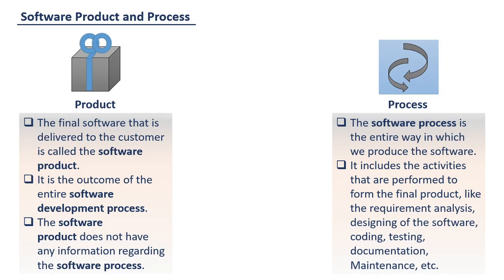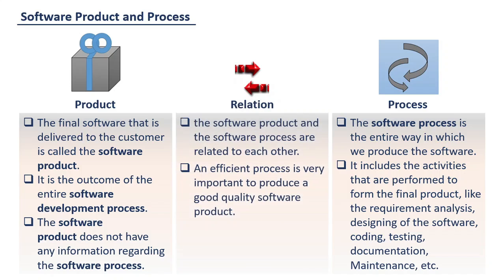Now, let us understand the relation between product and process. Both the software product and the software process are related to each other. An efficient process is very important to produce a good quality software product. If the software development process is weak, then the final product will undoubtedly suffer.